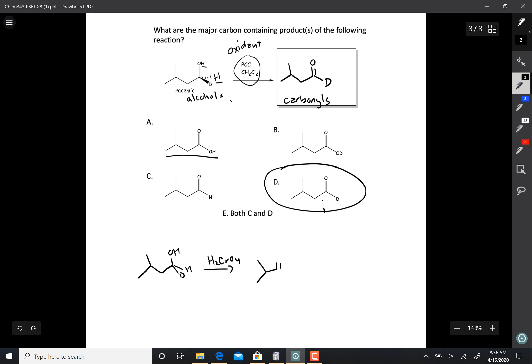Chromic acid takes primary alcohols and turns them into carboxylic acids. Now, I say this is a primary alcohol because that carbon is attached to only one other carbon.